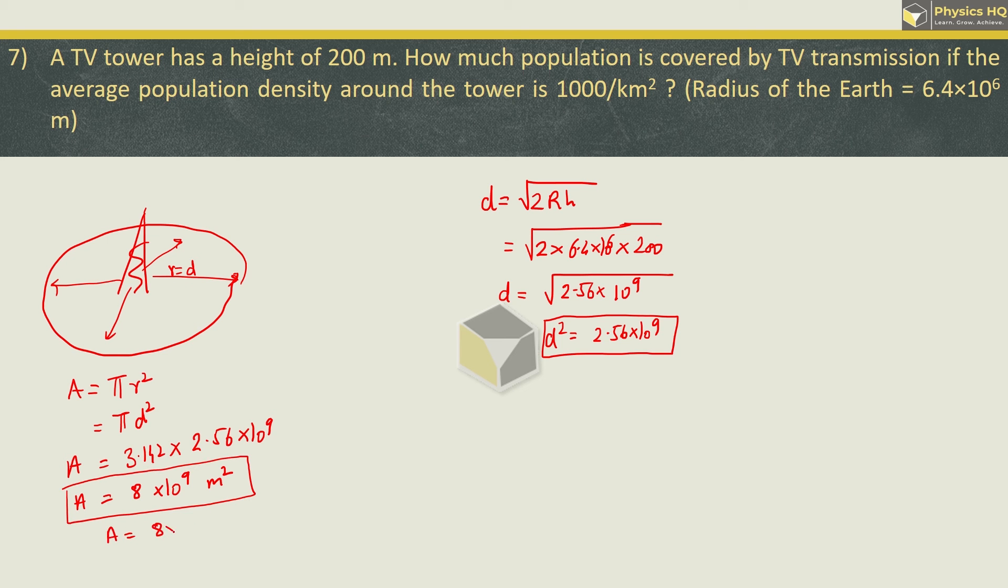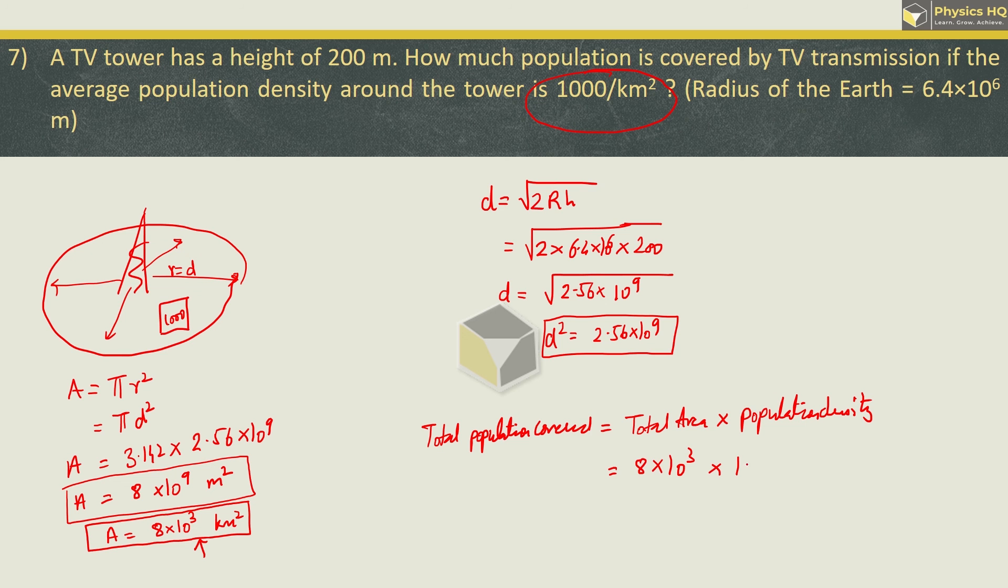Now when you multiply this you will get approximately 8 into 10 raise to 9 meter square. This is the total area coverage. If I convert this to kilometer, this will be equal to 8 into 10 raise to 3 kilometer square. So the total population covered is total area which is 8 into 10 raise to 3 times population density 1000. Total population covered is 8 into 10 raise to 6.